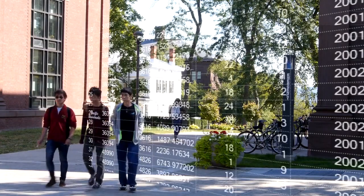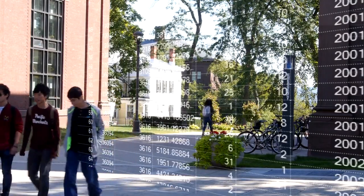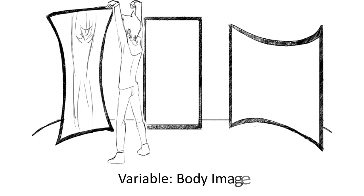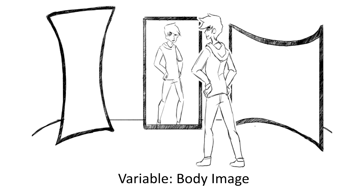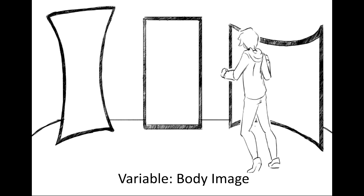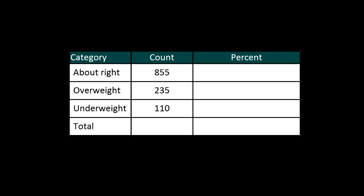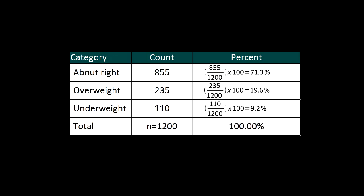There's no way that we can answer these questions by looking at the raw data, which are in the form of a long list of 1,200 responses — that's just not very useful. However, all these questions will be easily answered once we summarize and look at the frequency distribution of the variable body image — that is, once we summarize how often each of the categories occurs. In order to summarize the distribution of a categorical variable, we first create a table of the different values or categories the variable takes, how many times each occurs (the count), and how often each occurs, expressed by converting the counts to percentages.